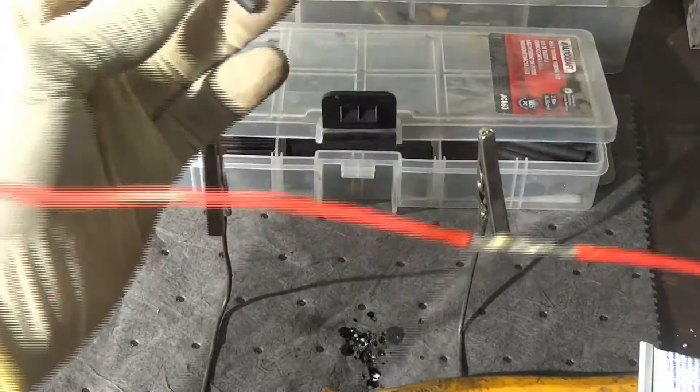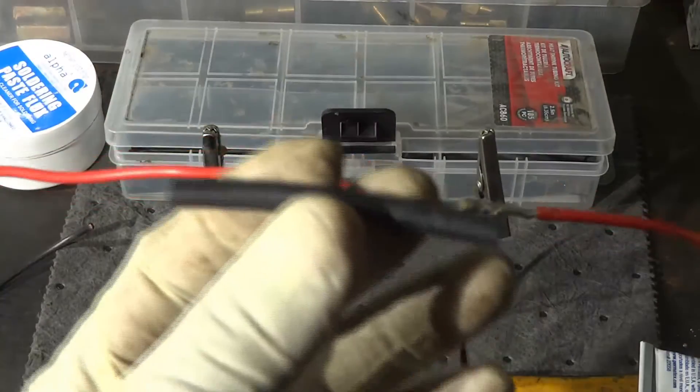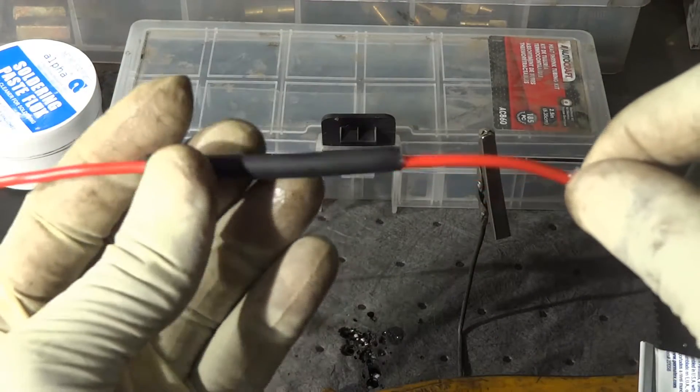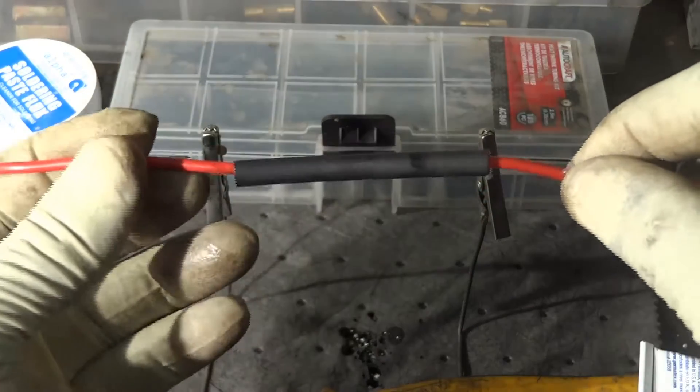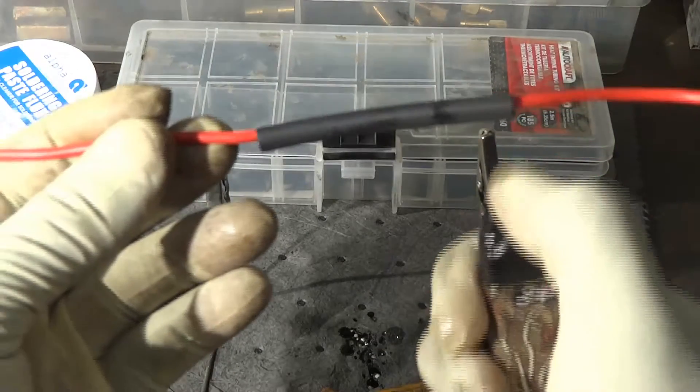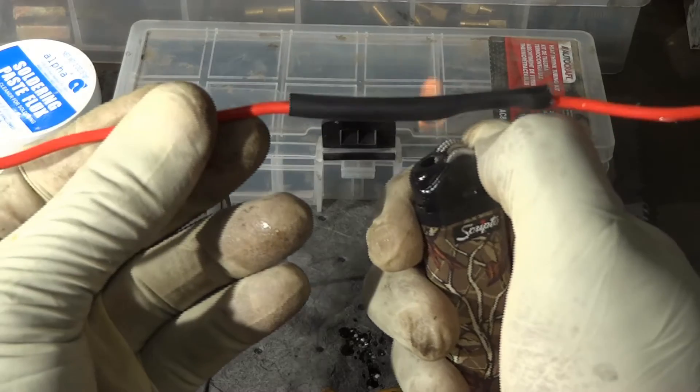And this is the right type of tube for our wire. And we're going to slide it over that soldered section. Now we can shrink our heat shrink tube.